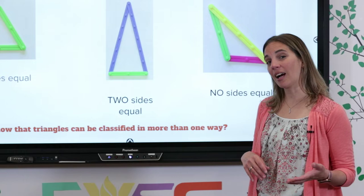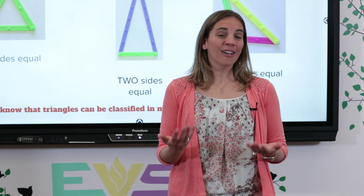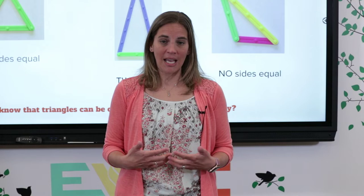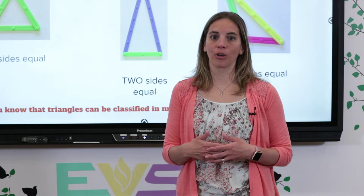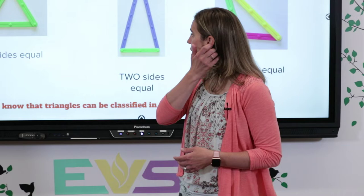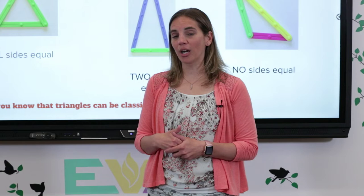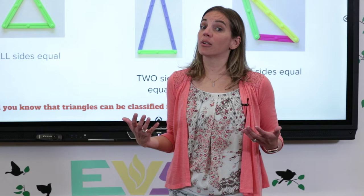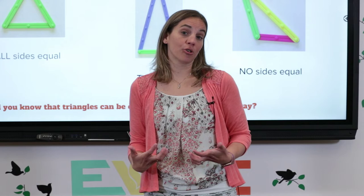Did you know that triangles can actually be classified in more than one way? I go by a lot of different names — Mrs. Hoffman, just Hoffman, Kathy, my dad calls me Kat. Triangles are the same way. Think of it as a first name and a last name. All triangles are going to have two classifications. These three — equilateral, isosceles, and scalene — are sort of like our triangles' last names. Today we're going to classify our triangles in two ways.